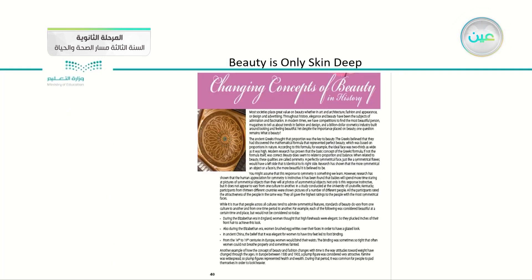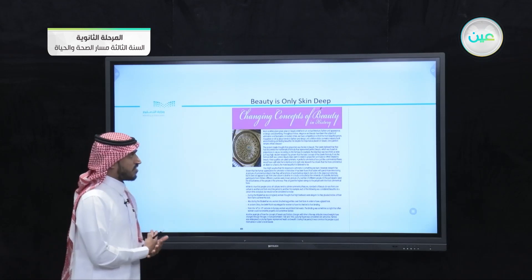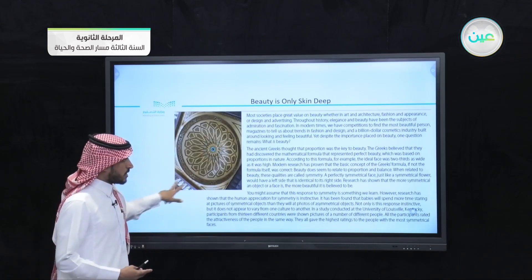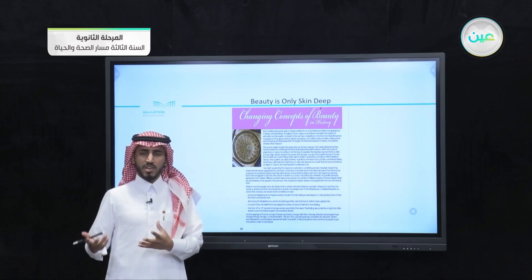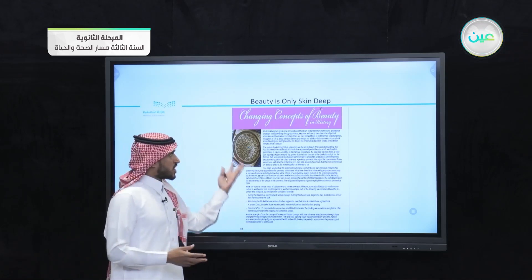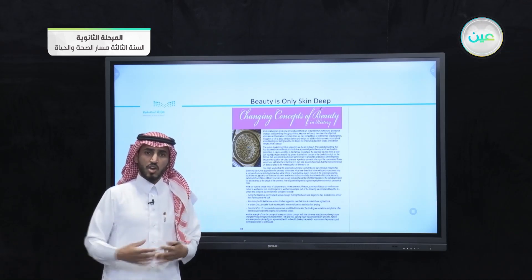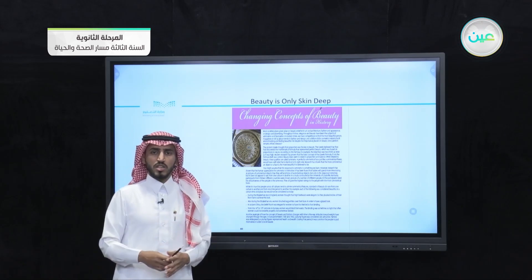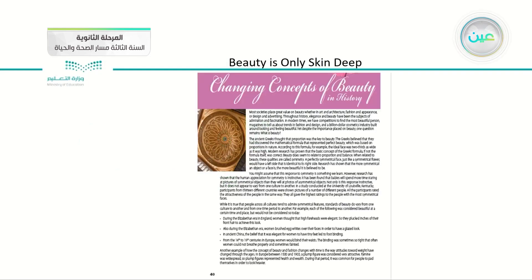After that, we started reading the essay together. The title of the essay is Changing Concepts of Beauty in History. We talked about the meaning of the word concept — it means the idea or notion behind something. So changing concepts of beauty in history means changing ideas, perspectives of people toward beauty throughout history. We read this essay together and talked about new meanings and ideas. We started the lesson by talking about strategies of reading an essay or any text.